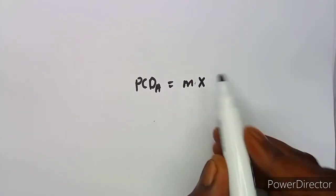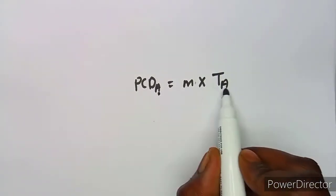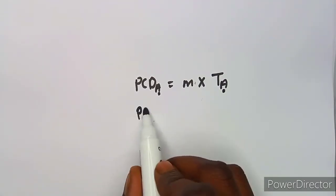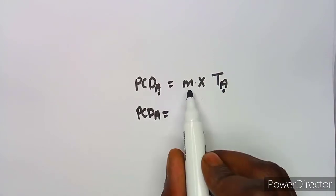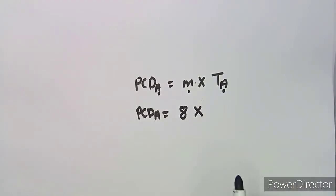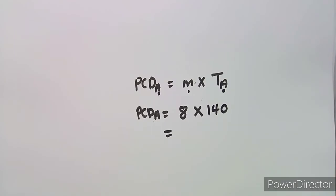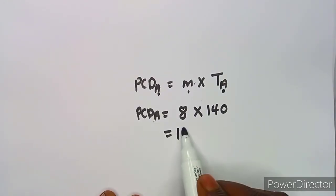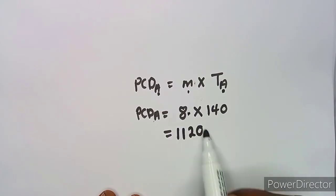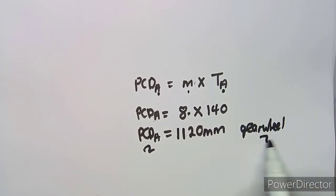So the pitch circle diameter for A, which is the gear wheel, uses the same module of 8 millimeters times T_A, which is 140. That gives us PCD_A = 1120 millimeters. That is the pitch circle diameter for the gear wheel.